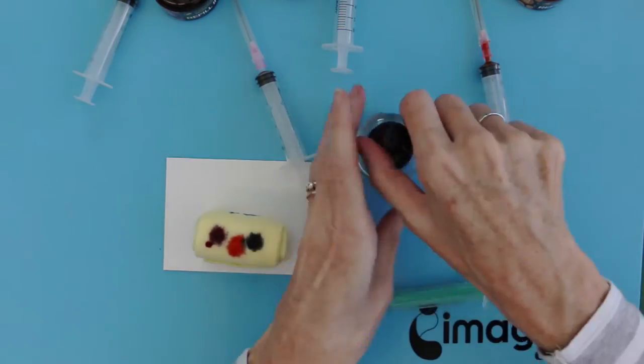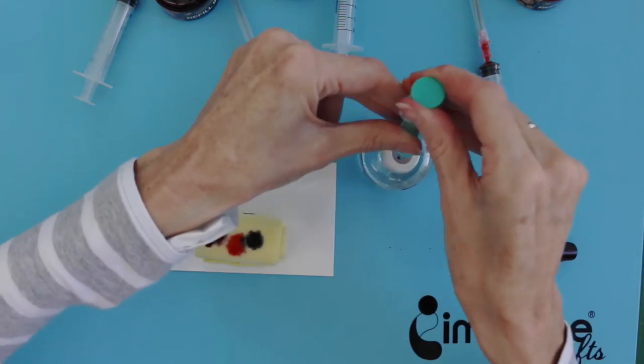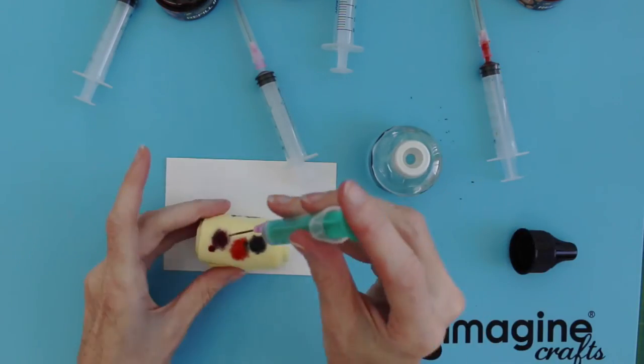Finally, take some blending solution into the syringe and add a small amount to the felt.